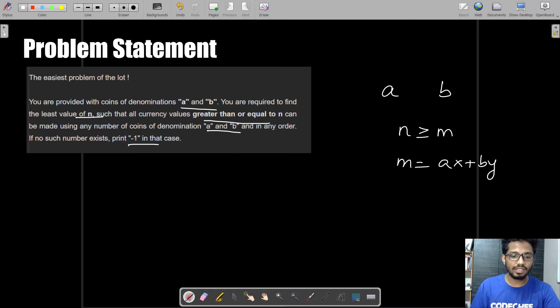For example, if the two integers given are 1 and 6, the least value you will be returning is 0, because all values greater than 0 can be represented in the form 1x + 6y. If you are given the numbers 2 and 4, the answer would be -1.